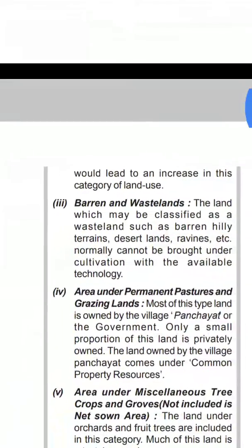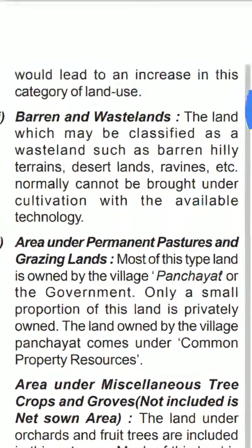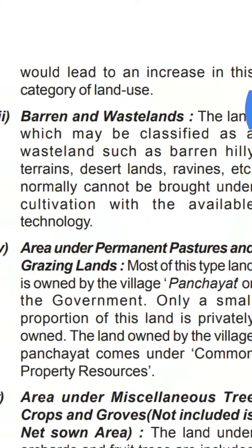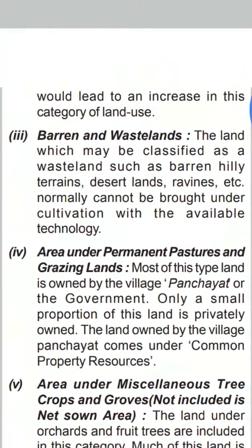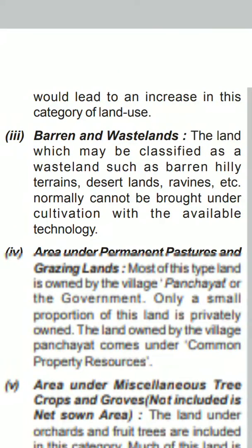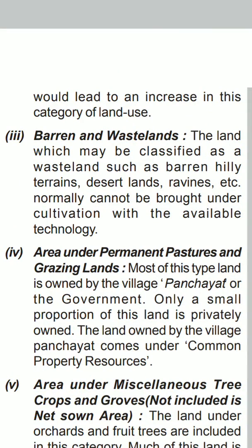The third point is barren and wasteland. These are lands where no agriculture can be done at all. To remember this, use the word DUR: D for desert land, U/A for arid land, and R for ravines. If you remember DUR, you can understand barren and wasteland.